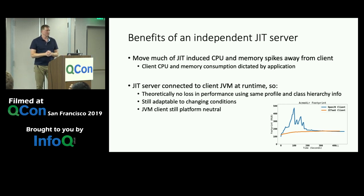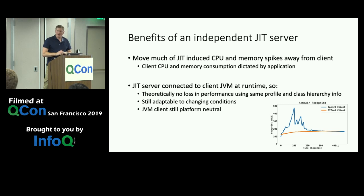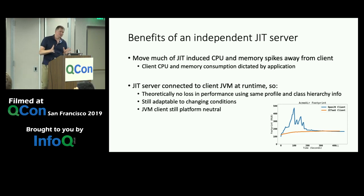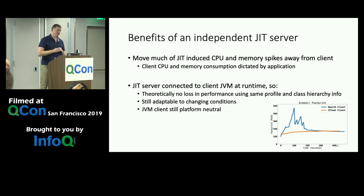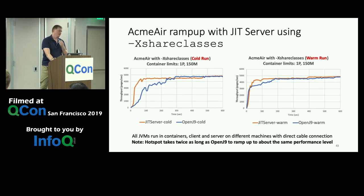The benefits: we move unpredictable JIT-induced CPU and memory spikes out of the client, giving application memory footprints that are far easier to predict. The JIT server connects at runtime, so there's theoretically no performance loss — it uses the same profile data and class hierarchy information from the running process. It's still adaptable to changing conditions, and the JVM client remains platform neutral. In fact, the JIT server doesn't even need to run on the same kind of machine as the client.